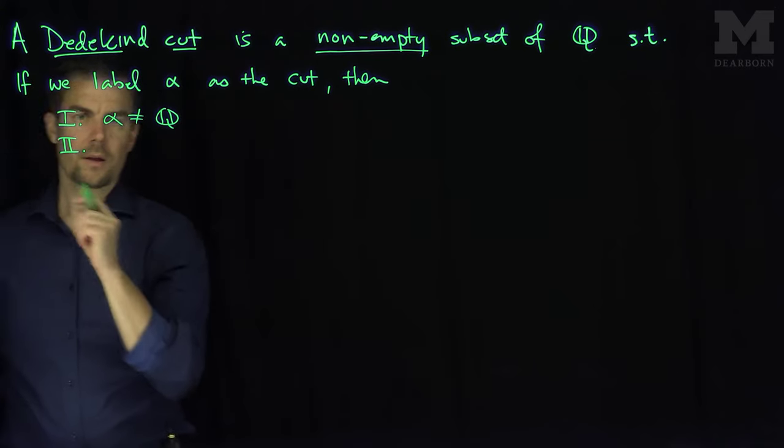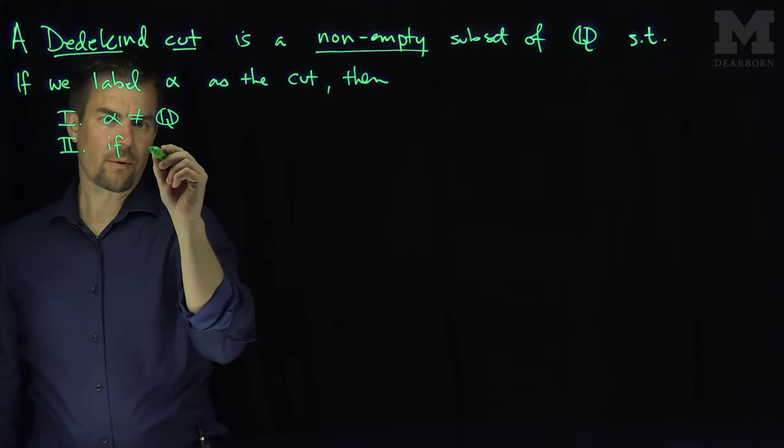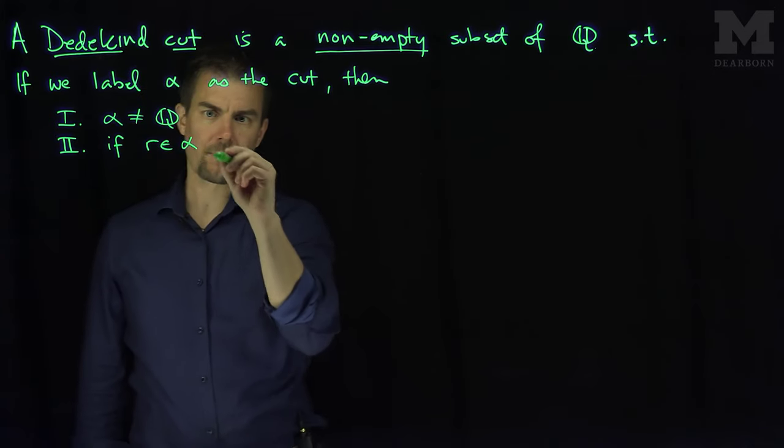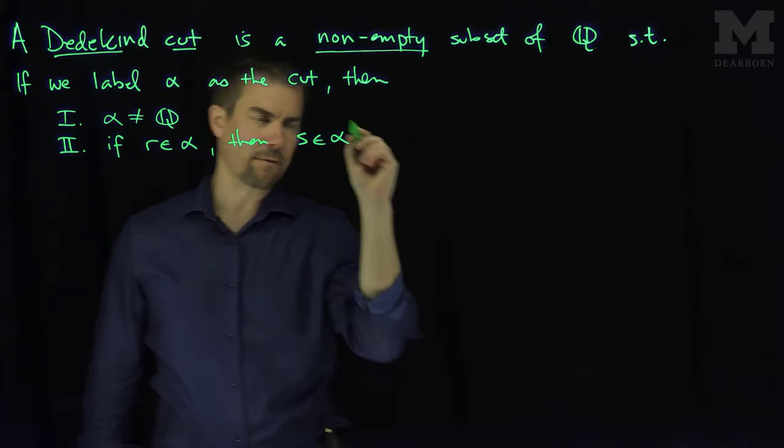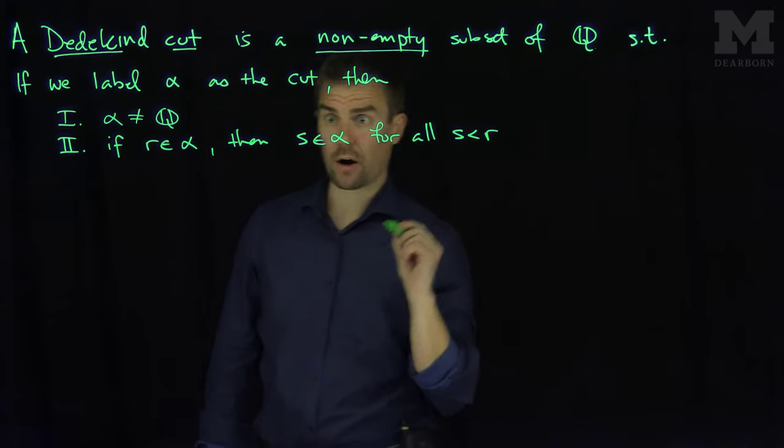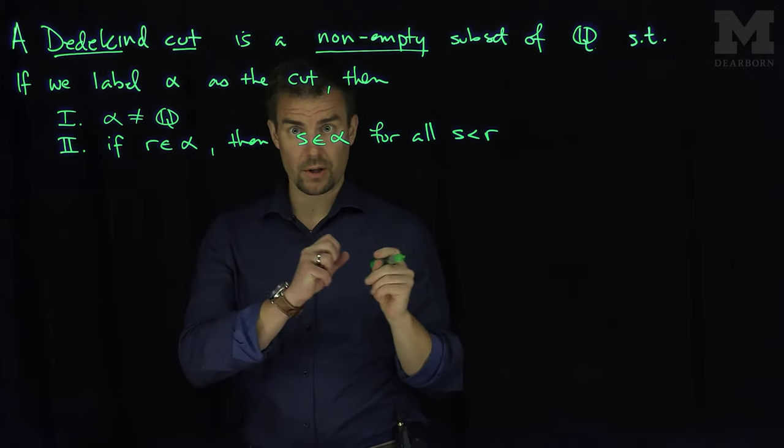Property two is that if a rational number R is in the cut alpha, then S is in the cut alpha for all S less than R. So every number that is smaller than the number in the cut also is in the cut.